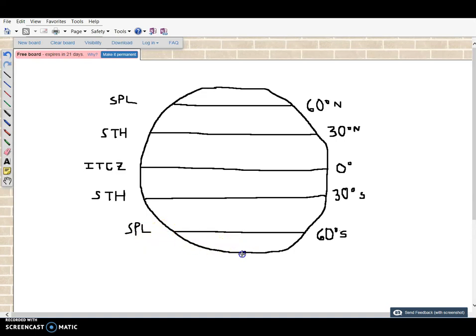The only thing left to draw is our polar high at 90 degrees north and 90 degrees south. Great, we've drawn the four pressure zones in both the northern and southern hemisphere.